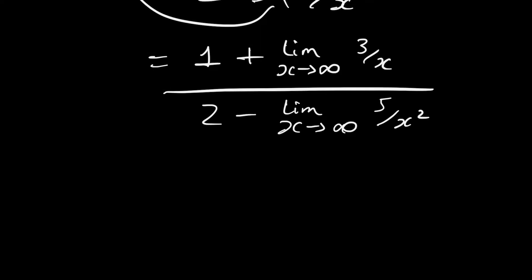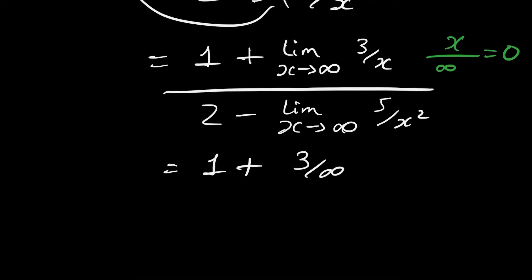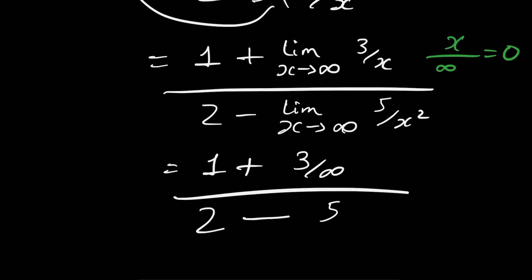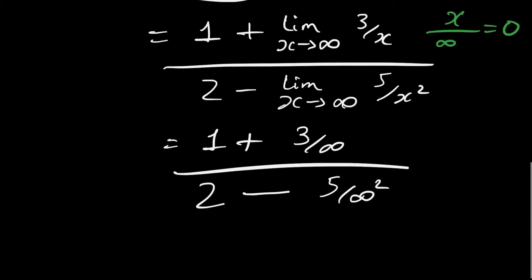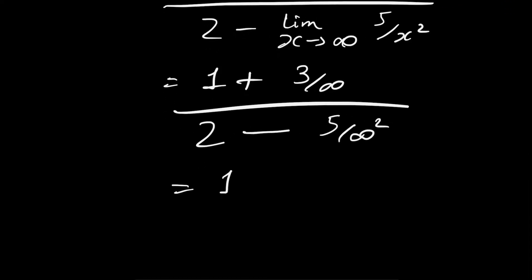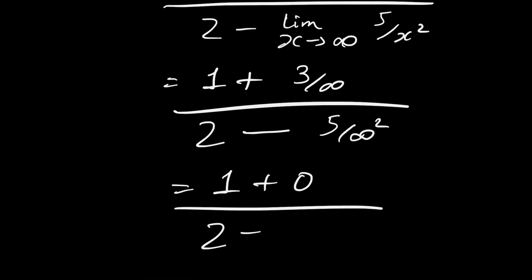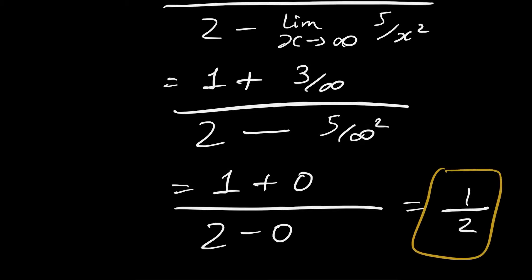Now we substitute x as infinity. Keep in mind that any number divided by infinity is always 0. So this becomes 1 plus 3 over infinity, divided by 2 minus 5 over infinity squared. Since any number divided by infinity is 0, this becomes 1 plus 0 divided by 2 minus 0, which is simply 1 divided by 2. That's your answer.